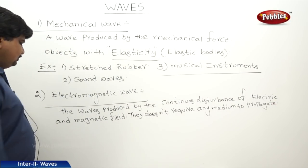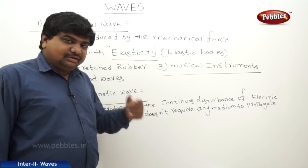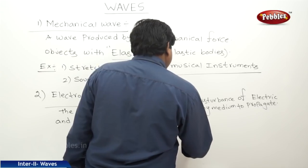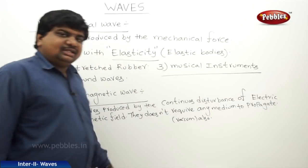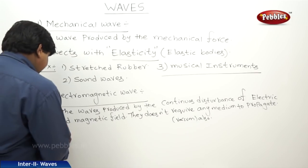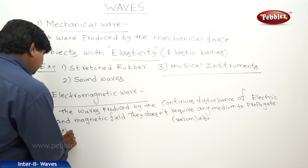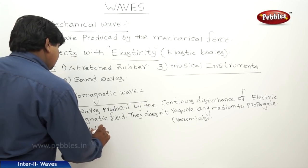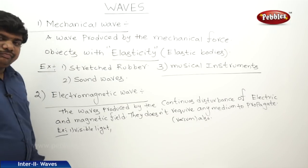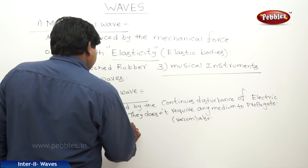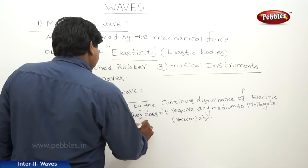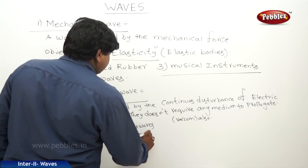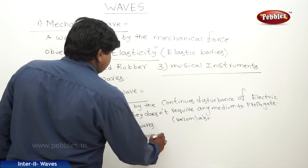Electromagnetic waves can travel in a vacuum as well. Examples of electromagnetic waves include visible light, radio waves, microwaves, and so on.